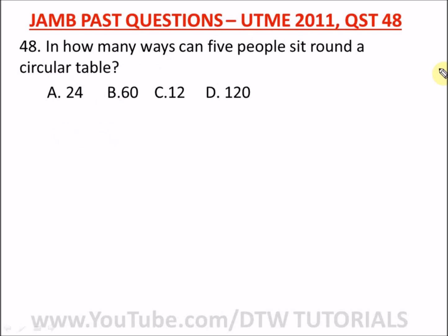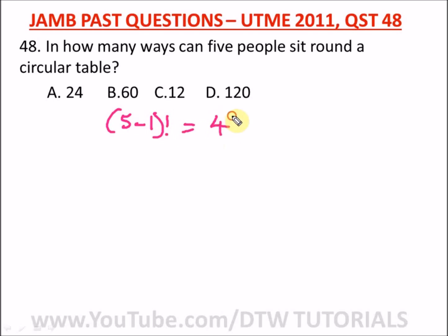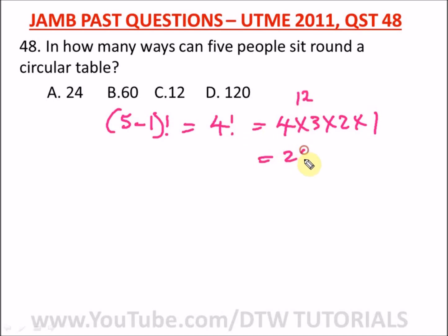Our next question is from JAM 2011 question 48: in how many ways can five people sit around a circular table? For a circular table, one person is in a fixed position, so we have five minus one factorial, which is four factorial. Four times three times two times one equals 24. The correct option is option A.